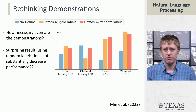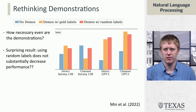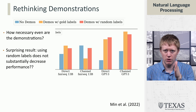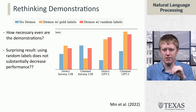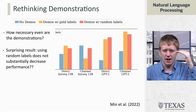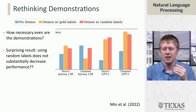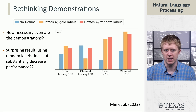Another result is due to Min et al., who studied how necessary it is to have demonstrations, and what role the label in the demonstration plays. The somewhat surprising finding is that if you replace the gold label with a random label — essentially mislabeling the example — performance is almost the same. This indicates the model is recognizing the format: it's got a review and needs to predict a sentiment, and showing examples surfaces the right behavior from the model. But it's not really teaching the model the semantics of the sentiment label; those semantics are largely imparted by the pre-training process.